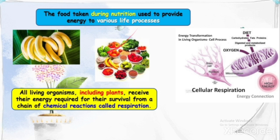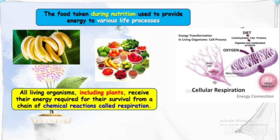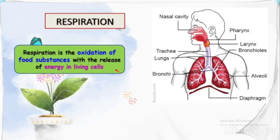All living organisms, including plants, receive their energy from a chain of chemical reactions called respiration. In respiration, inhaled air contains oxygen which diffuses into blood and, in the form of oxyhemoglobin, reaches every cell. Mitochondria in the cells utilize this oxygen and provide energy in the form of ATP. Oxygen is also supplied to nervous cells and neurons, which are highly active.